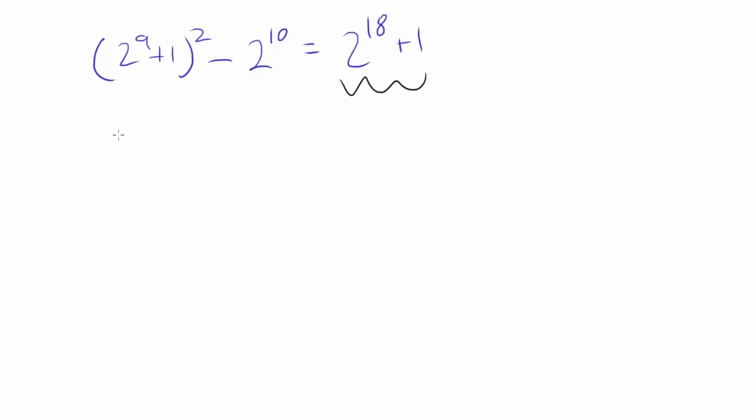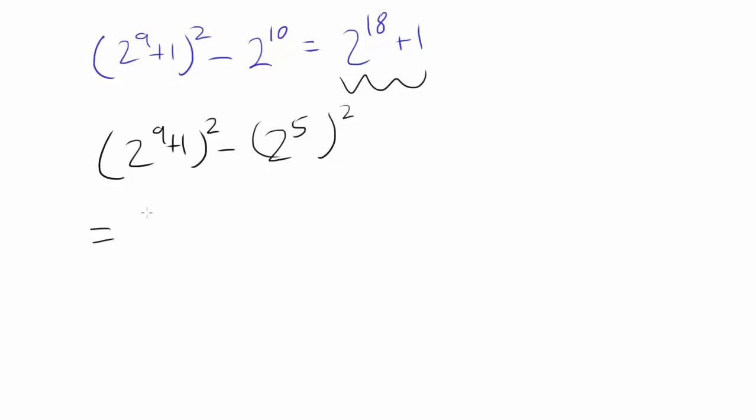And what can you do with this expression? Yes, you can. It's a difference of squares. You have 2 to the 9th plus 1 squared minus 2 to the 5th squared. Aha! You have something going on. You have 2 to the 9th plus 1 minus 2 to the 5th times 2 to the 9th plus 1 plus 2 to the 5th.